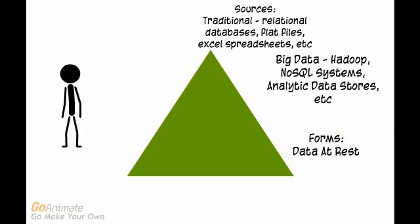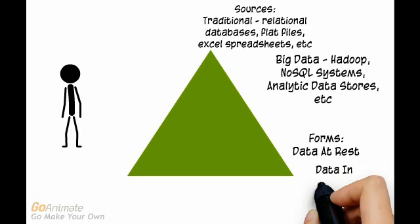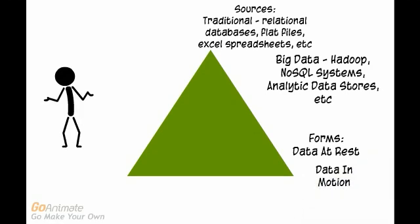On the second corner of the data triangle, we have forms of data. This would include data at rest, which refers to data about transactions that have occurred in the past, and data in motion, also sometimes referred to as streaming data.